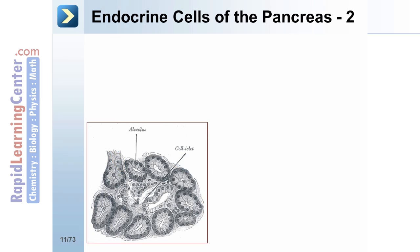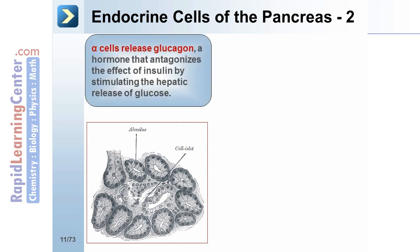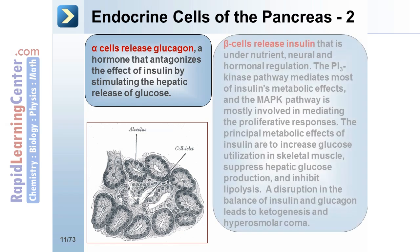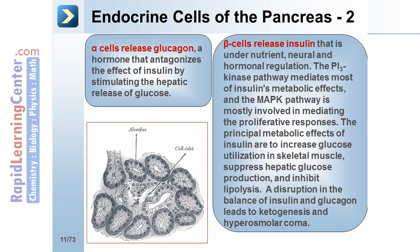Let's take a closer look at the cells that make up the islets of Langerhans. Alpha cells release glucagon, a hormone that antagonizes the effect of insulin by stimulating the hepatic release of glucose. Beta cells release insulin that is under nutrient, neural, and hormonal regulation. The PI3 kinase pathway mediates most of insulin's metabolic effects, and the MAPK pathway is mostly involved in mediating the proliferative responses.